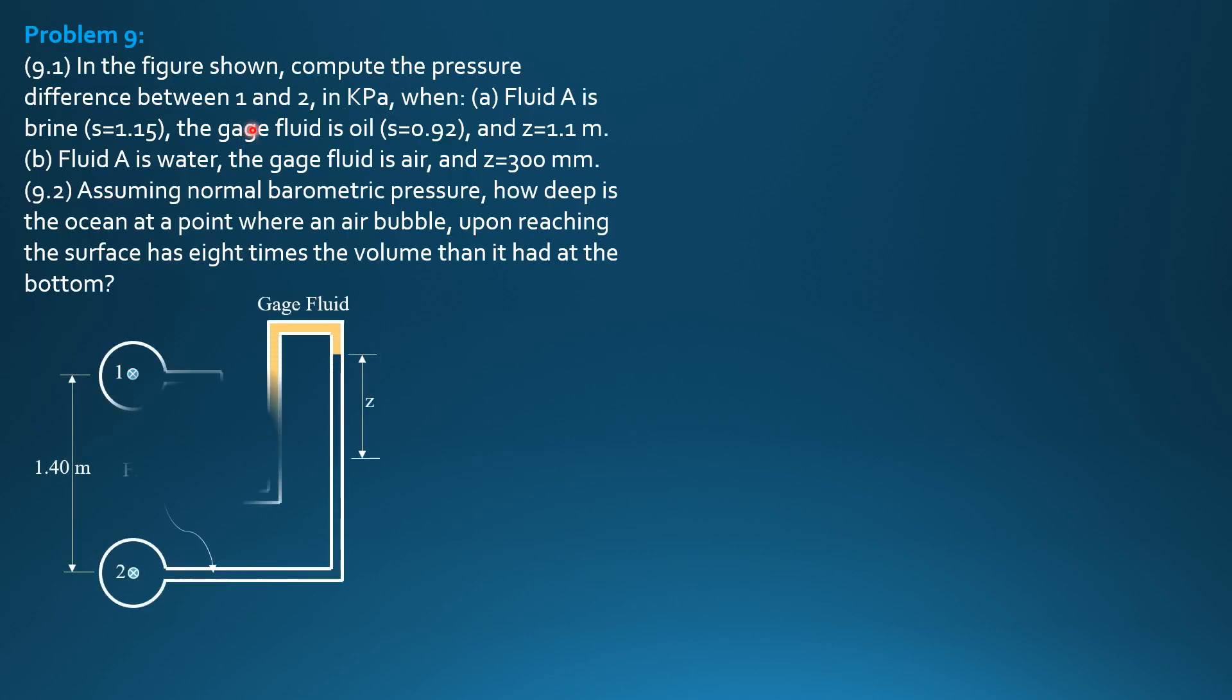Example 9. In the figure shown, compute the pressure difference between 1 and 2 in kilopascals when, letter A, fluid A is brine with specific gravity 1.15, the gauge fluid is oil of specific gravity 0.92, and the value of Z is 1.1 meter.